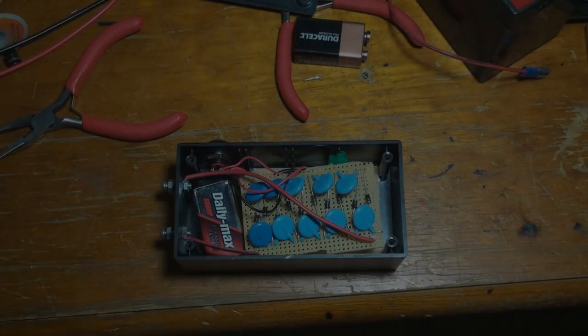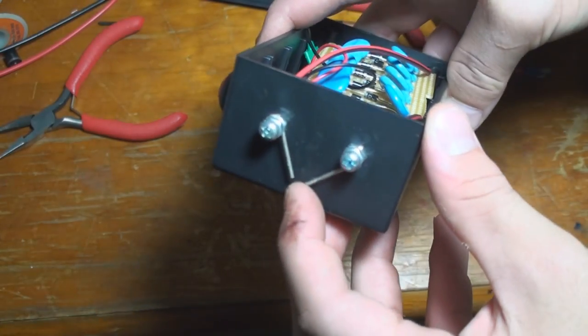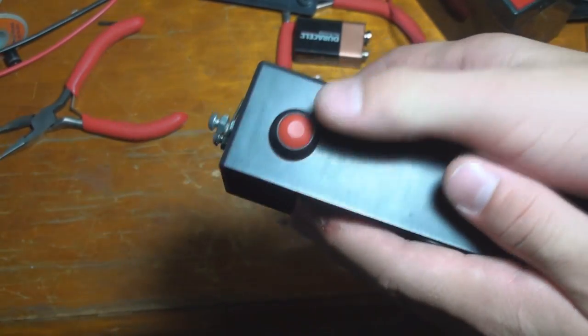So here is the stun gun. It's housed in a project box and powered by a 9-volt battery. It's got two prongs, a spark gap, and it also uses a momentary switch.